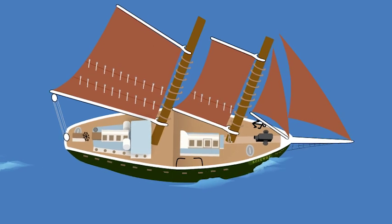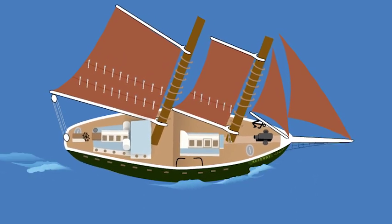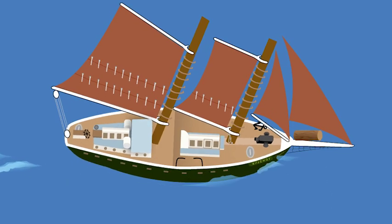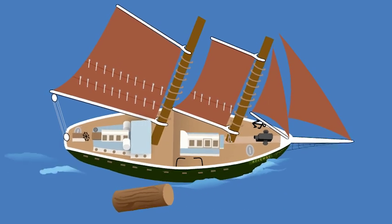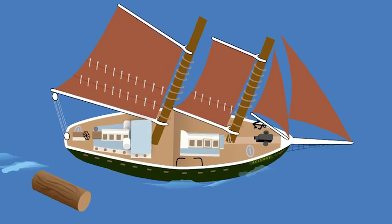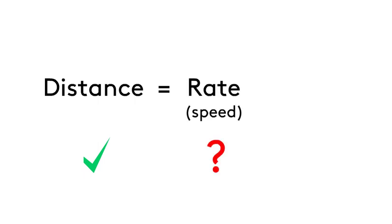Before modern navigation instruments could measure speed, navigators on ships would use a Dutchman's log to calculate the ship's speed. They would drop the log overboard from the bow and count how long it took to pass the stern. Because distance equals rate, or speed, multiplied by time, they were able to calculate the speed of the ship.